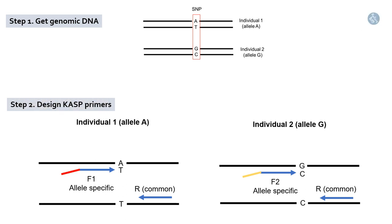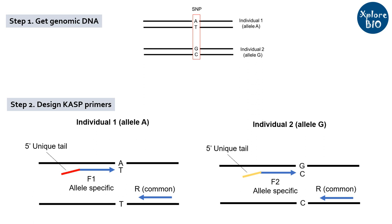While designing and synthesizing the allele-specific forward primers, you have to add some extra nucleotides at the 5' end. This is known as the tail sequence, which does not anneal to DNA as there is no complementary sequence in the DNA. But why do we add the tail sequence? The tail sequence is complementary to the fluorescent probes that will be used for fluorescence-based detection. We add two different tail sequences in allele-specific forward primers, complementary to two different fluorescent probes.